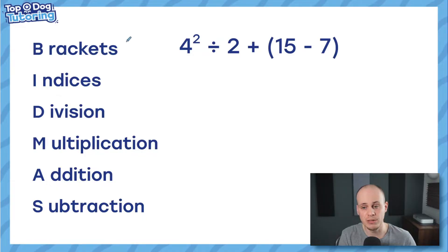First thing on our list, the highest priority is brackets. All that means is you have to do what's inside the brackets. What's inside the brackets here is 15 take away 7. So, my good practice is replacing this with the answer to the brackets. 15 take away 7 is 8. And now I'm left with a new equation. 4 squared divided by 2 plus 8. Brackets can be ticked off.